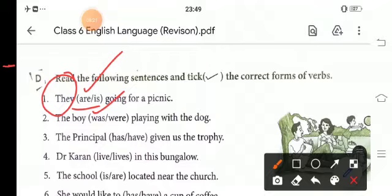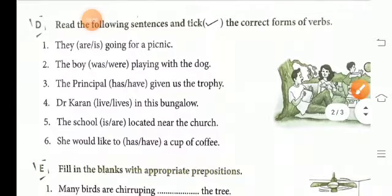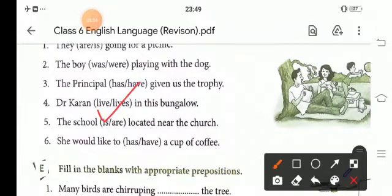The boy was playing with his dog. The principal has or have given us the trophy. The principal has. Then, the fourth one, Dr. Karan lives in bungalow. The school is located near the church. And, the sixth one will be, she would like to have a cup of coffee.